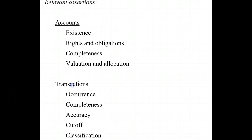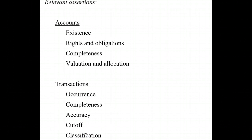Assertions relevant for classes of transactions or events occurring during the period include: occurrence — making sure they have actually occurred and pertained to the period; completeness — that all transactions have been recorded; accuracy — that they've been recorded appropriately; cut-off — that they've been recorded in the correct accounting period; and classification — that transactions have been recorded in the proper accounts.